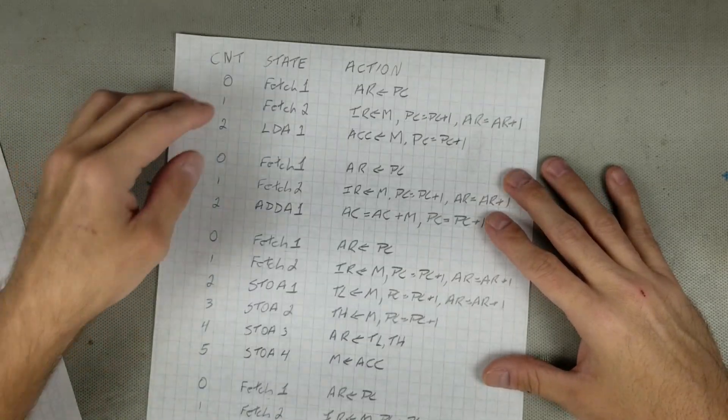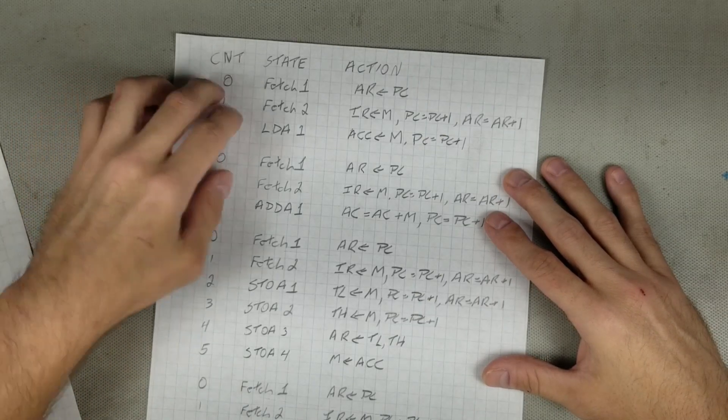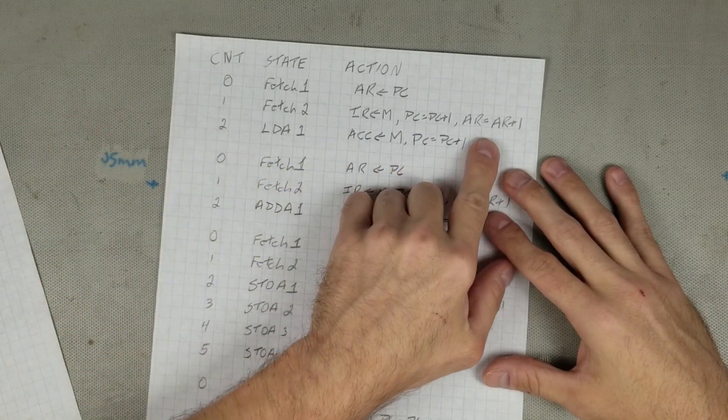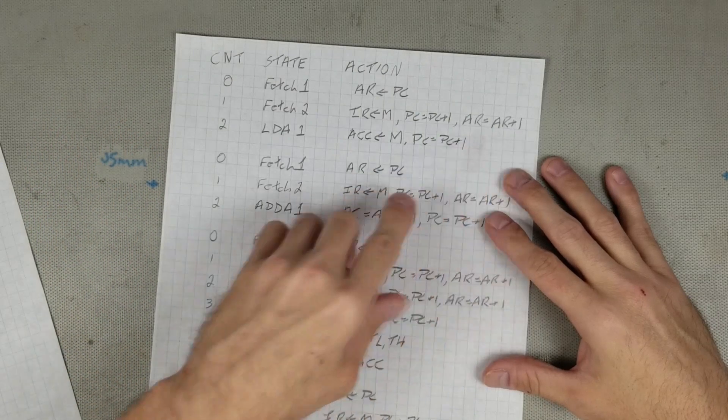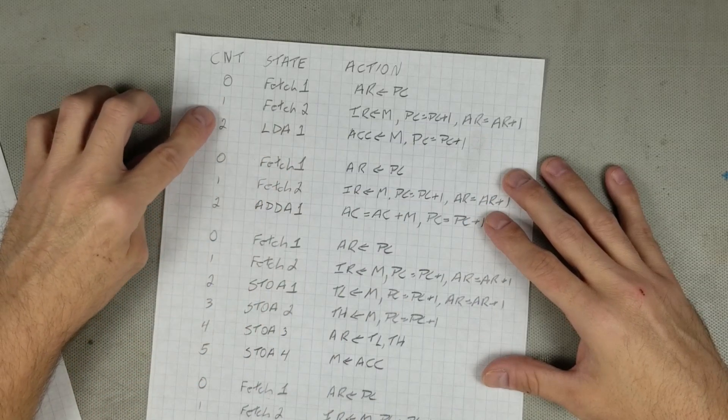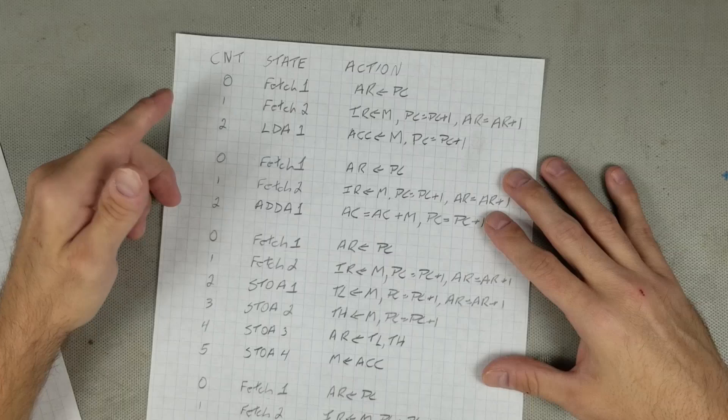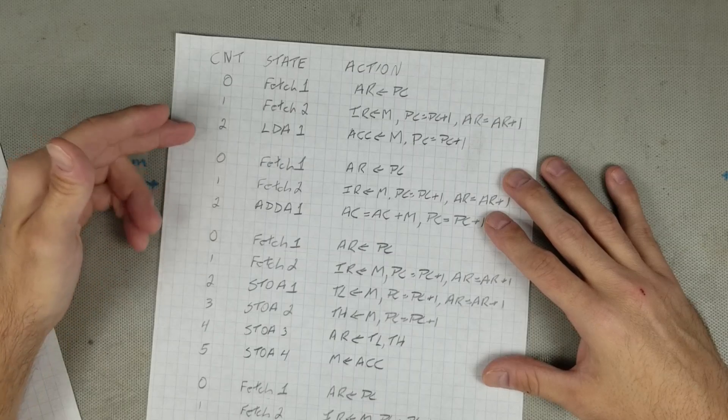Looking at the new state outline, there is still a fetch 1 and fetch 2, but fetch 2 now includes AR equals AR plus 1, and load A1 is now what load A2 was originally. Plus, it only uses 3 clock cycles instead of 4, giving that 25% performance boost. The add A instruction is changed in a similar way.